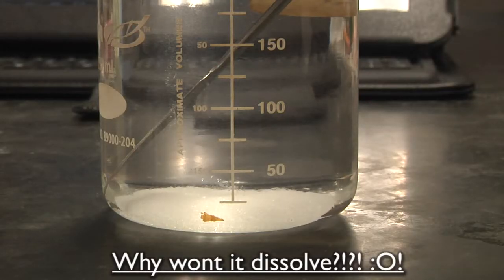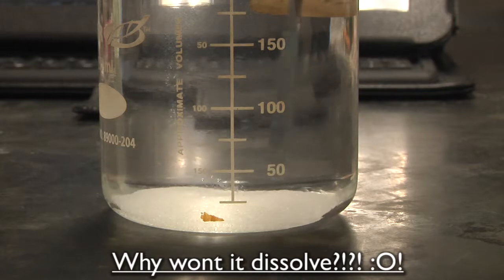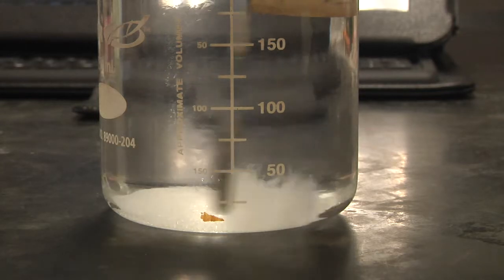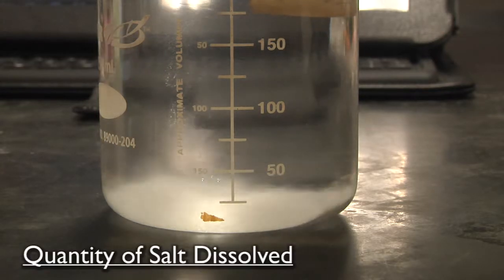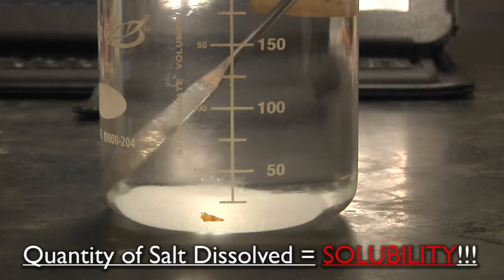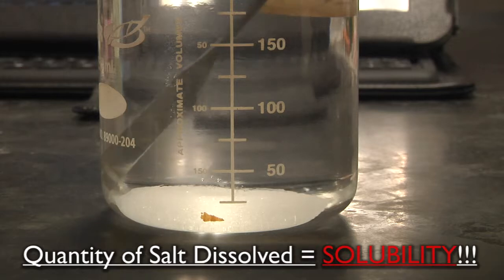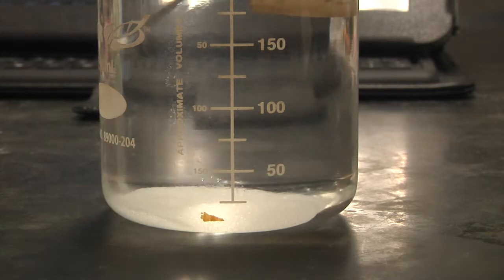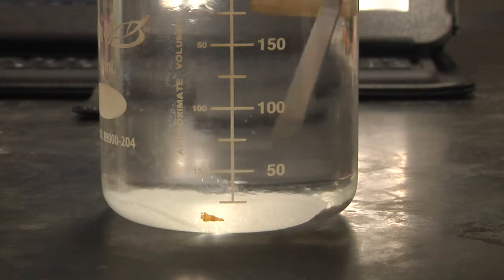Well, Bobby, at a certain point, we won't be able to dissolve any more salt into the water. The quantity of salt we are able to dissolve in our water is termed solubility. It is the quantity of material that can be dissolved into a solution before it falls out as a precipitate.